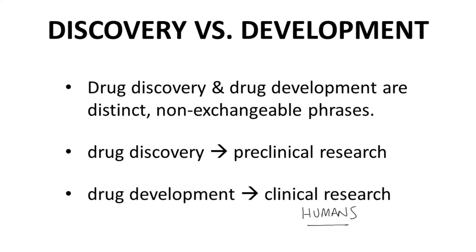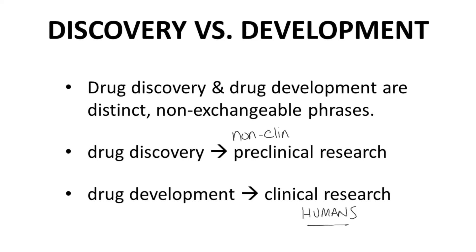In general, drug discovery — preclinical research — occurs first on many different molecules. The most promising molecule is then advanced into drug development, clinical research. This order is not always true, as there are some advanced preclinical tests that may be performed concurrently with clinical research. Therefore, some people favor the term non-clinical research over preclinical research.